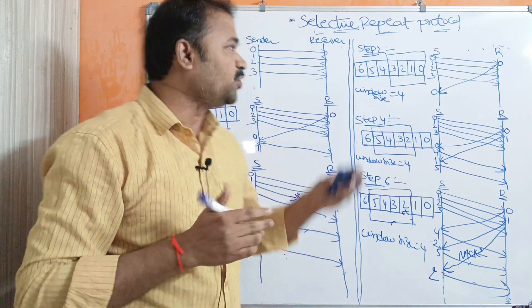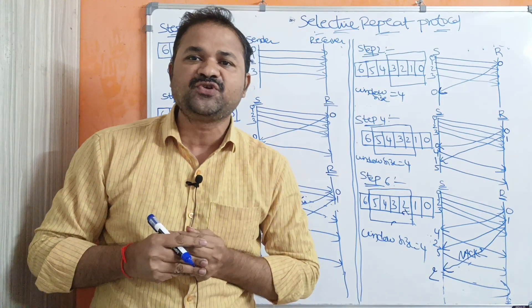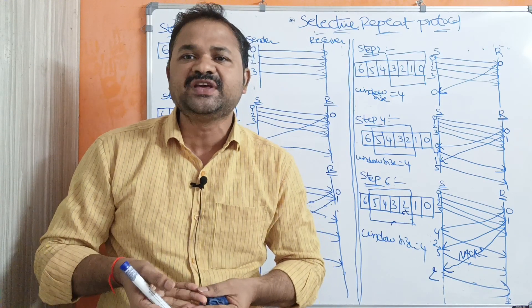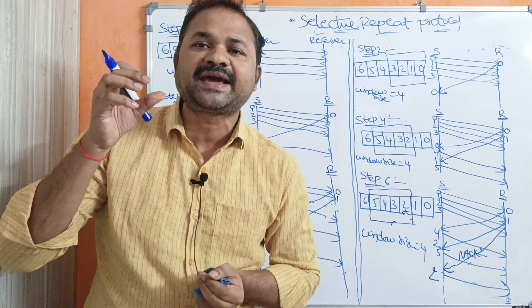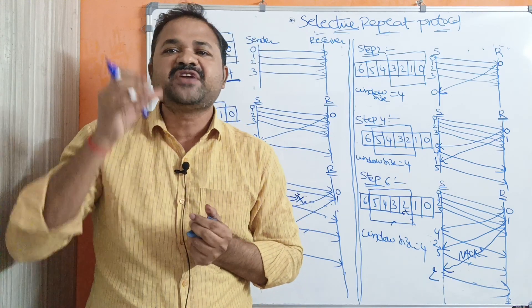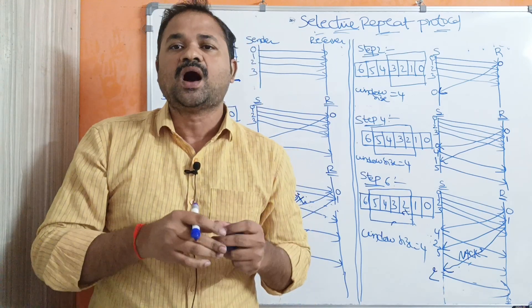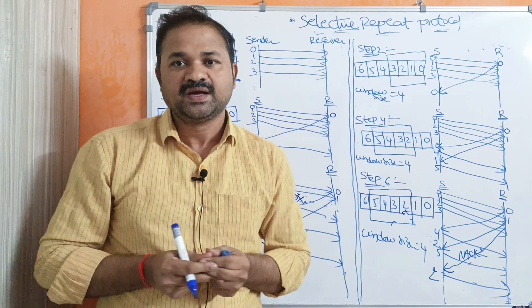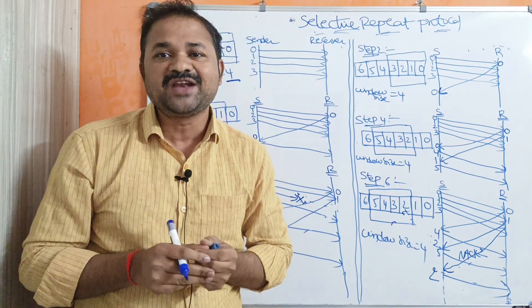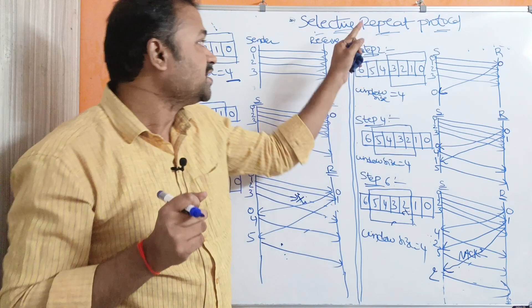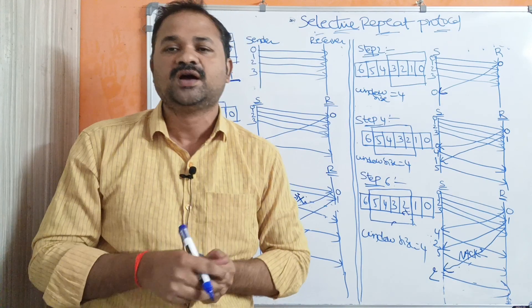Now let us discuss about Selective Repeat Protocol. It is mainly useful in order to overcome the problem with Go-Back-N ARQ protocol. The problem with Go-Back-N ARQ protocol is if a frame is lost, then all the frames which are in the window are retransmitted once again. Whereas in Selective Repeat Protocol, if a frame is lost, then only that lost frame will be selected and retransmitted one more time.